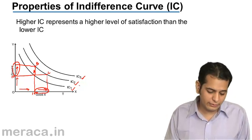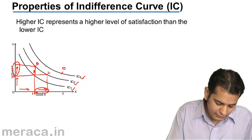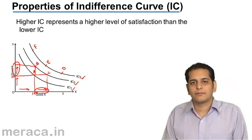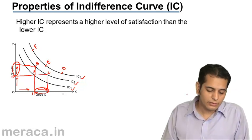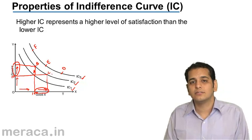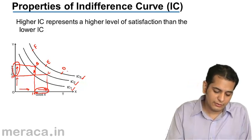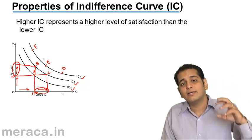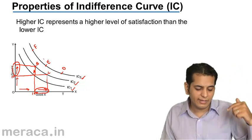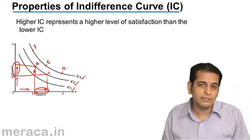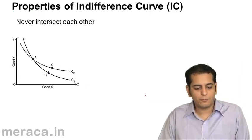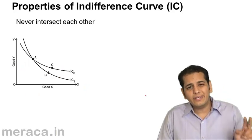If there are points D, E, and F on IC3, we can conclude that these points will give a higher level of satisfaction than points B and C, because D, E, and F lie on IC3, which is higher than IC2. Therefore, they will give more satisfaction.